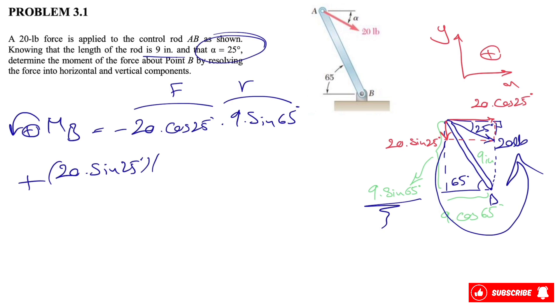And for multiplying that by r, or distance vector, again this will be the line of action of the force, and this distance, which is 9 times cosine of 65, will be the vertical distance for this force.